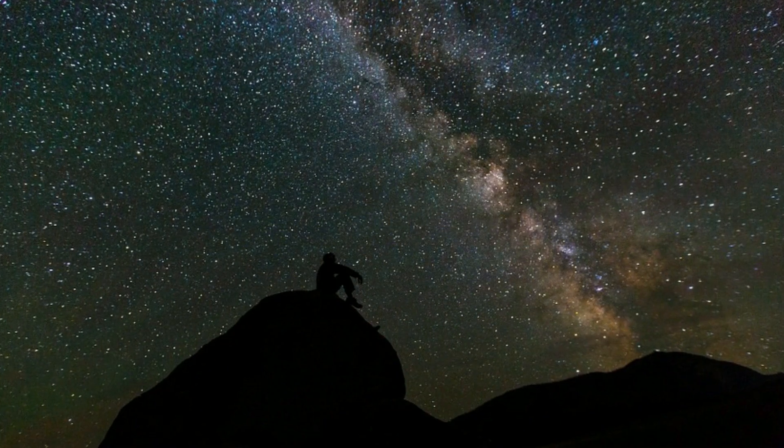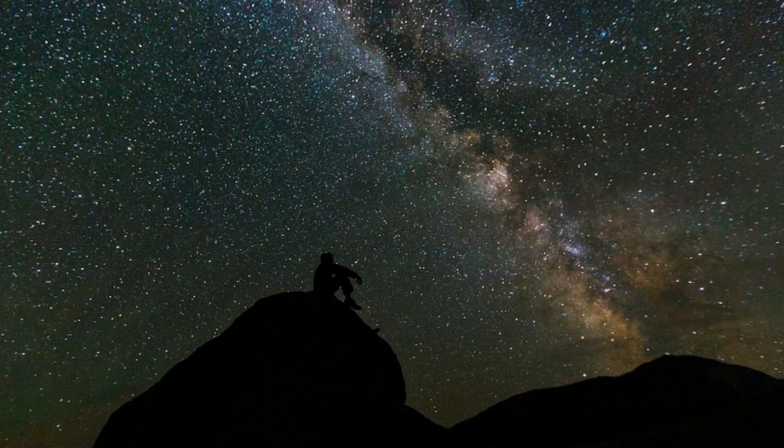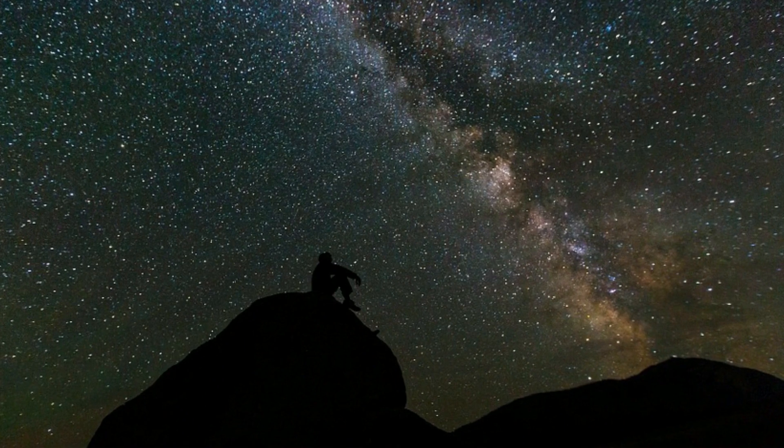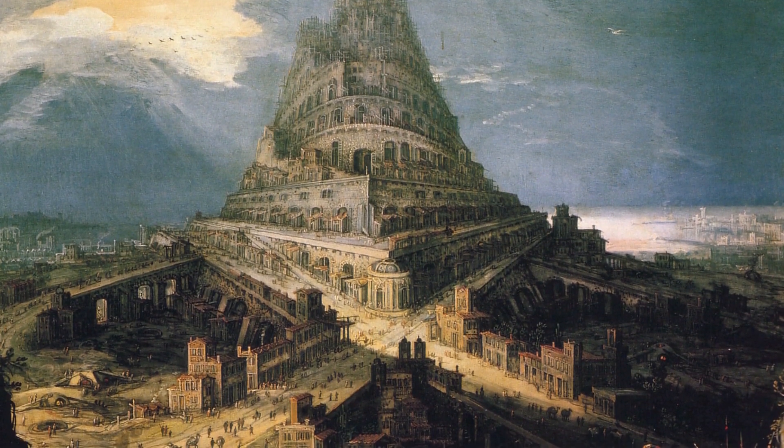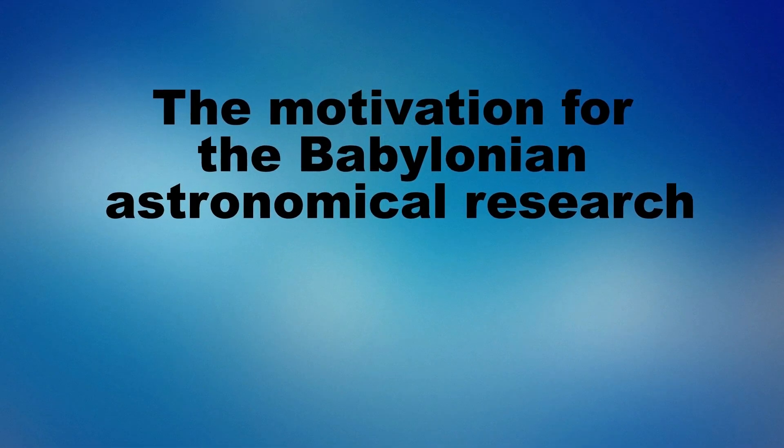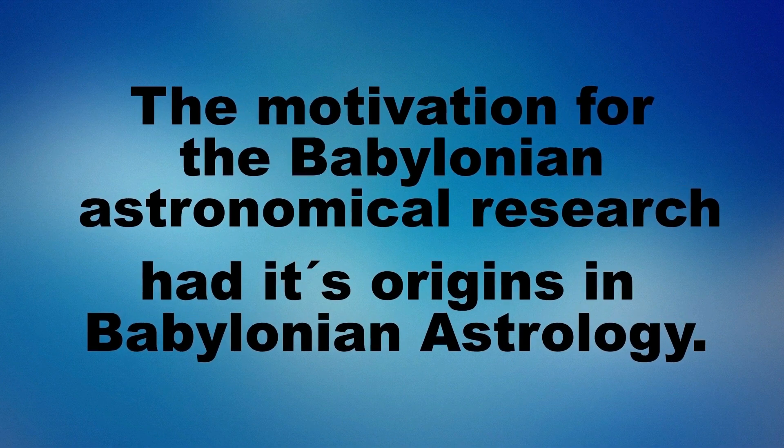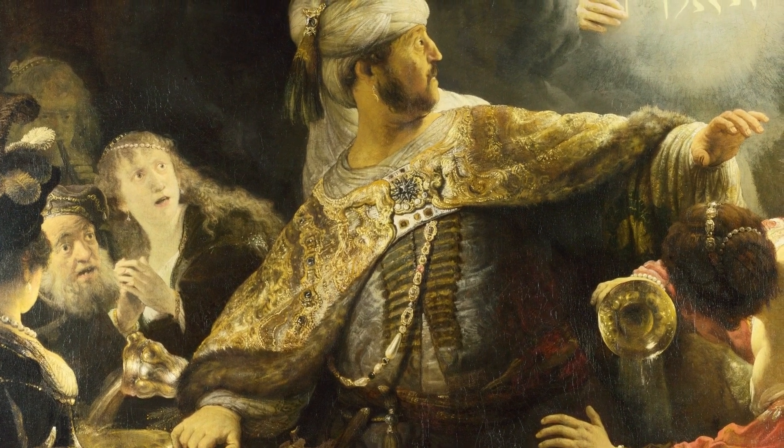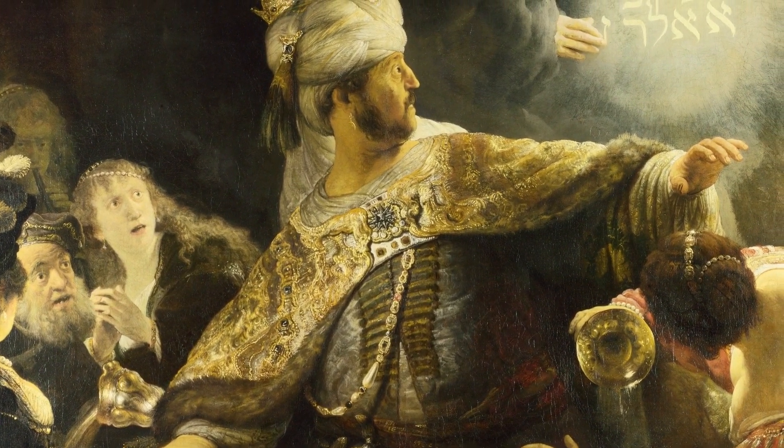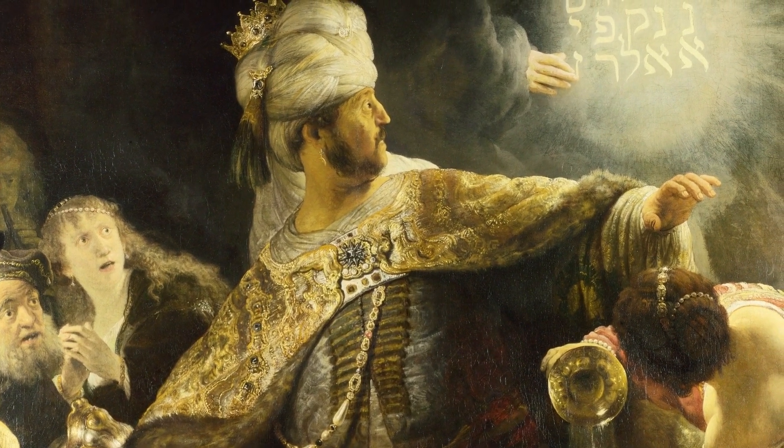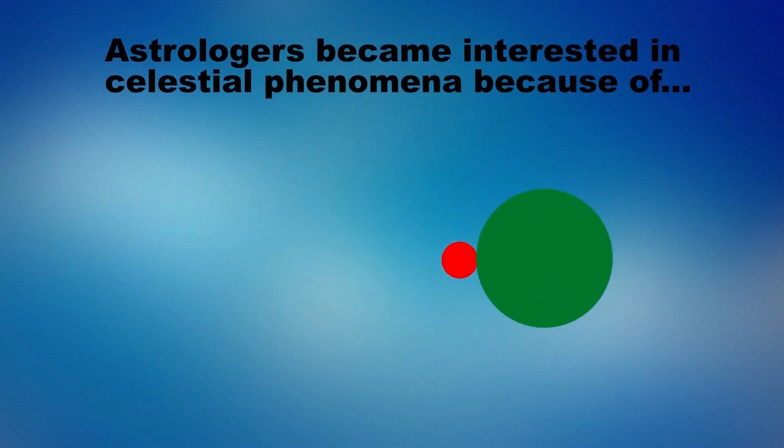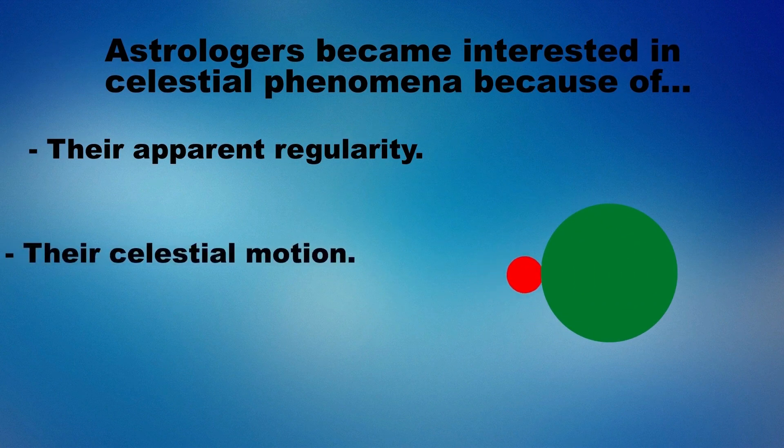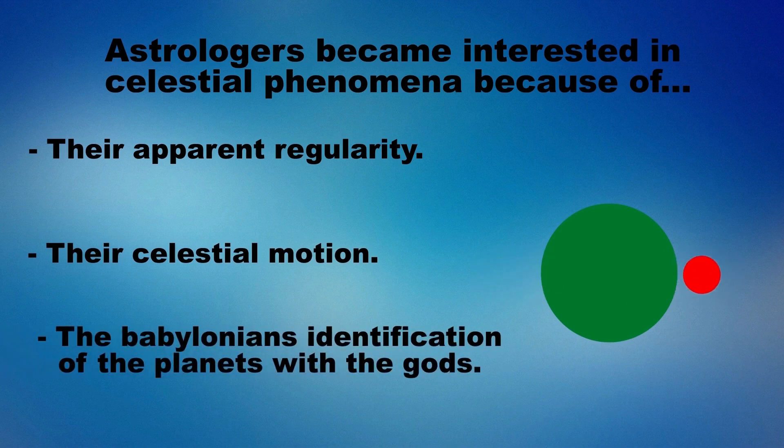The heavens have been the object of observation and speculations since the dawn of human existence, but the earliest evidence of systematic observations, measurements and cataloging of the stars and planets is found in ancient Babylonia during the second millennia BC. The motivation for the Babylonian astronomical research had its origin in Babylonian astrology. In ancient Near Eastern cultures it was universally believed that a wider range of natural phenomena contained concealed messages from the gods that might be deciphered by an adept astrologer. One phenomena that the gods were thought to speak through were celestial phenomena, which probably drew attention because of their apparent regularity, their celestial motion, and the Babylonians' identification of the planets with the gods.